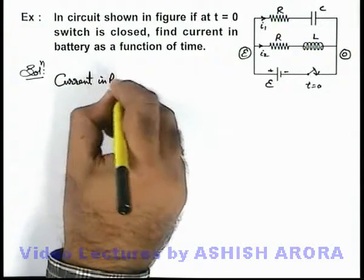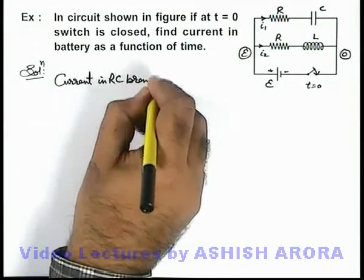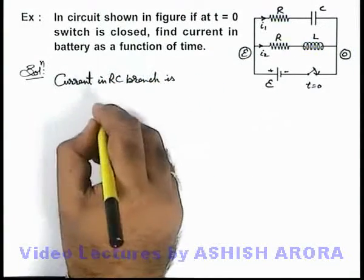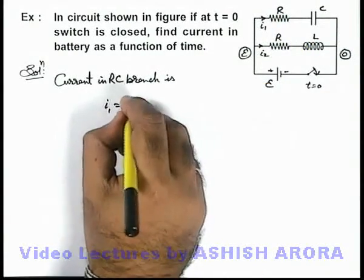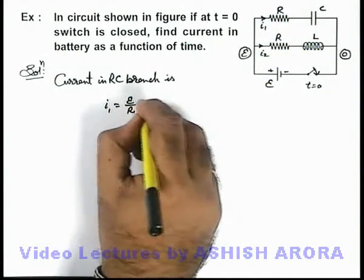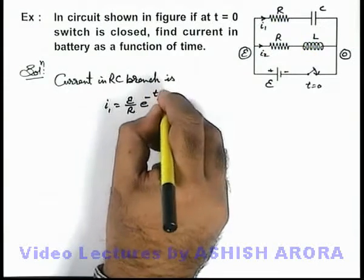Current in RC branch of circuit is: this can be written as the charging current of capacitor which is written as E by R, e to power minus t by RC.